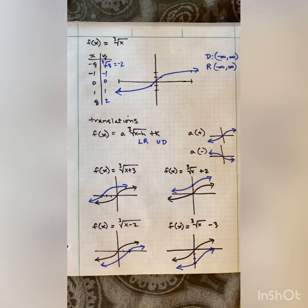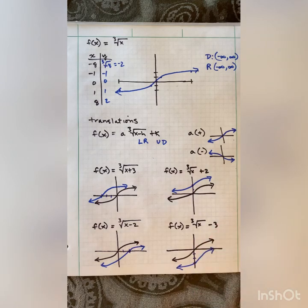And this one with the negative 3 outside makes it go down 3 — everything shifts 3 places down. That is it for 3.1. Have a great day, and good luck on the homework. Bye.